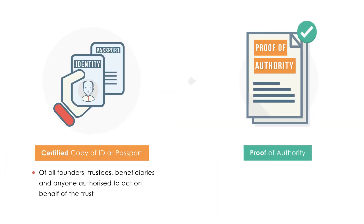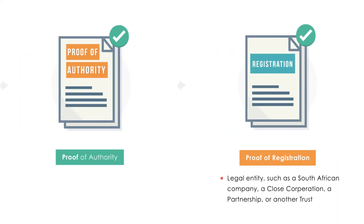Additionally, if a founder, trustee, or beneficiary is a legal entity such as a South African company, a closed corporation, a partnership, or another trust, you will need proof of their registration details.